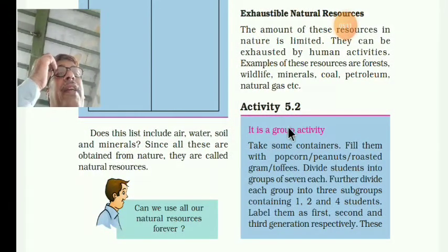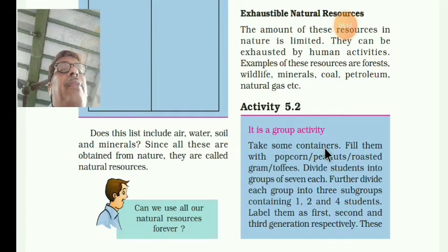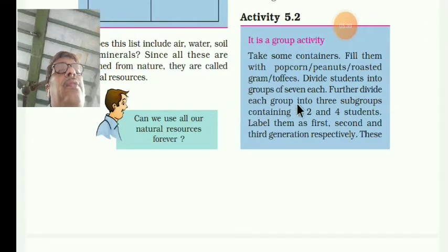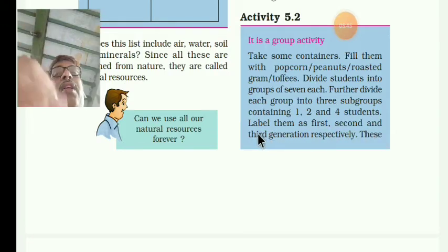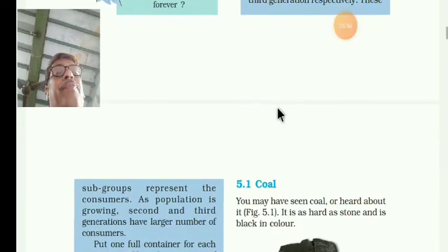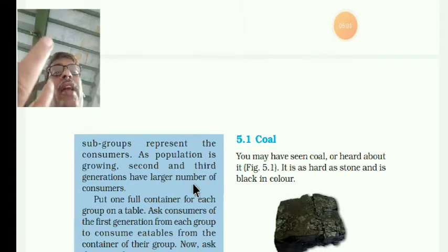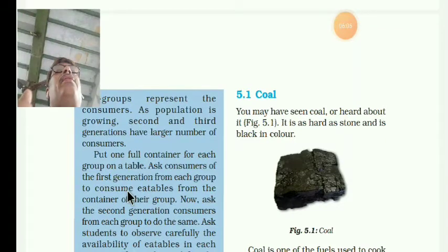For understanding, there is a group activity. Take some containers and fill them with popcorn, peanuts, roasted gram, some seeds. Divide students into several groups, each further divided into three subgroups of one, two, and four students. Label them first, second, and third generation — representing consumers. As population grows, second and third generation have a large number of consumers.